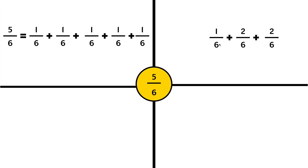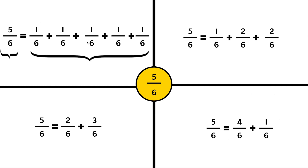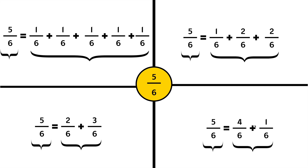We can say that 1/6 plus 2/6 plus 2/6 is equal to 5/6, because 1 plus 2 plus 2 makes 5 and we have like denominators. Another way to think about it is 2/6 plus 3/6 will equal 5/6. We have like denominators and 2 plus 3 is 5. Let's do it one more time: 4/6 plus 1/6 equals 5/6. 4 plus 1 is 5 and we have like denominators. This side is equal to this side, just like all the other sides are equal to each other.